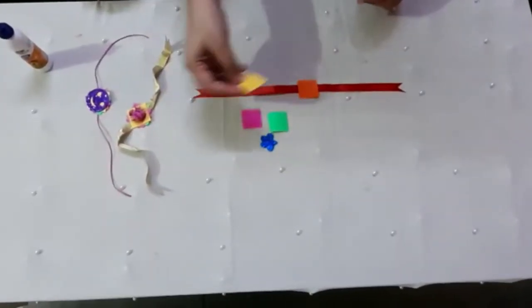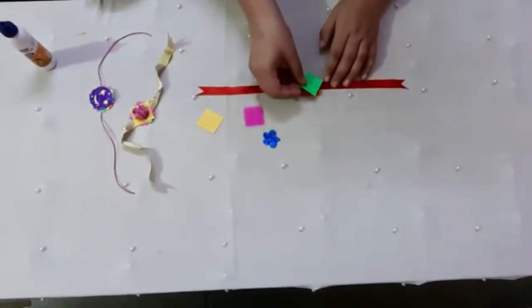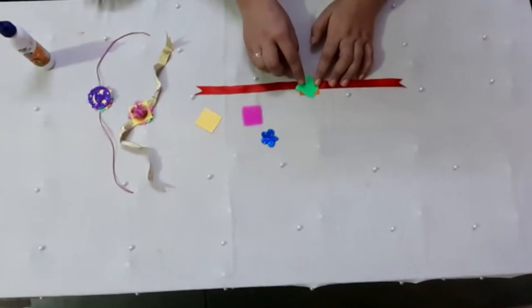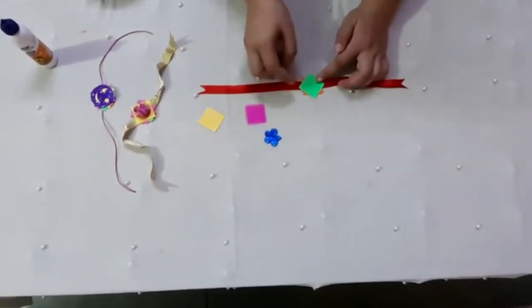After this we have to paste the next color square like this, so that its corners are visible.